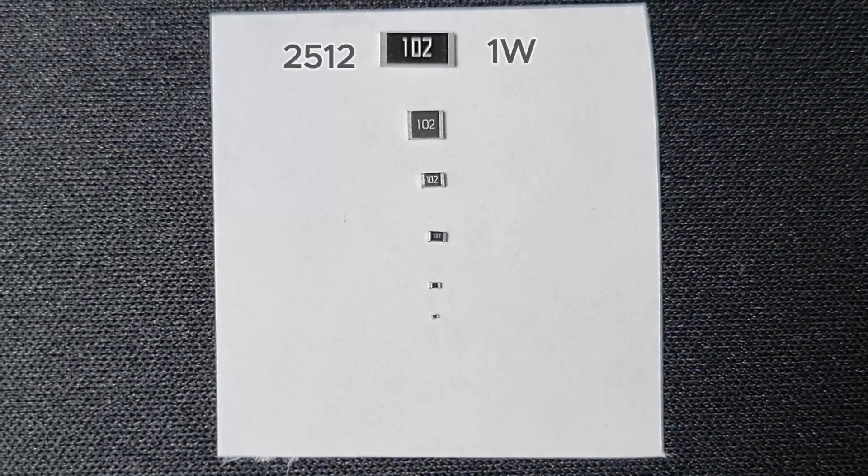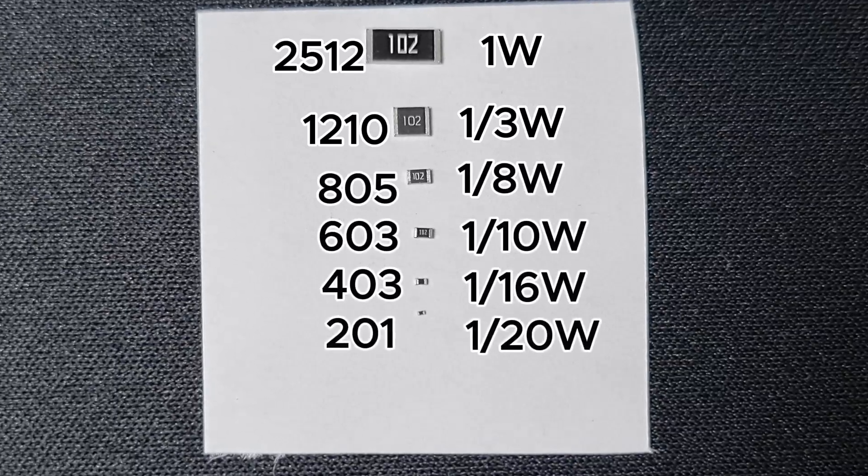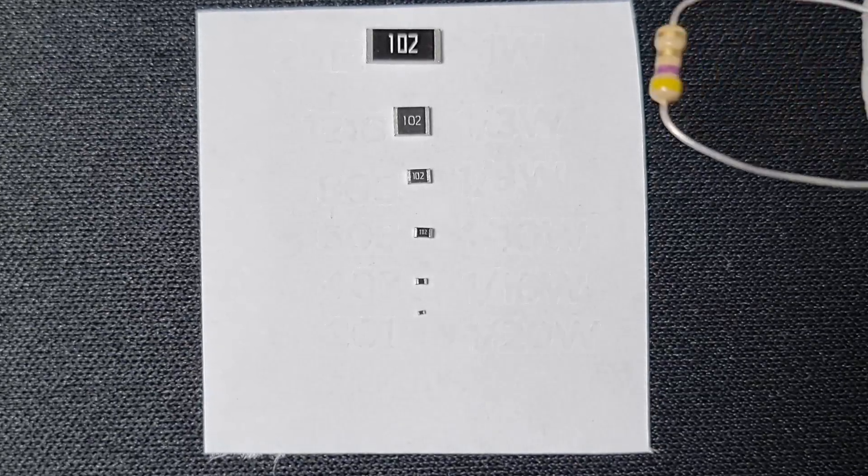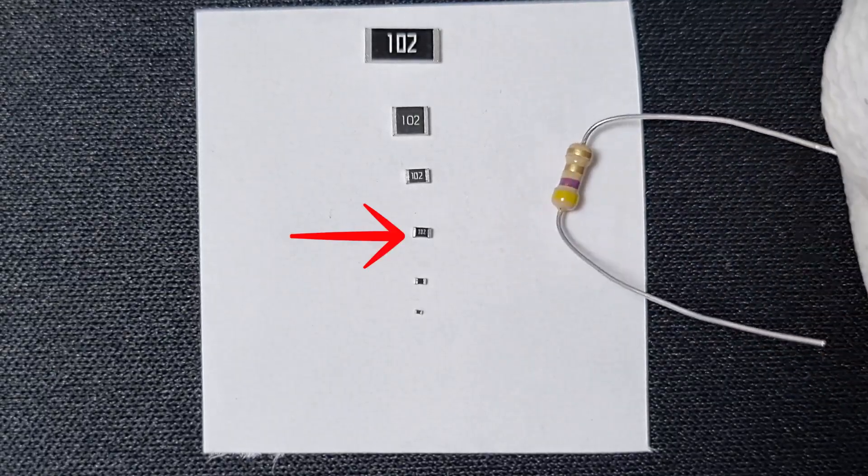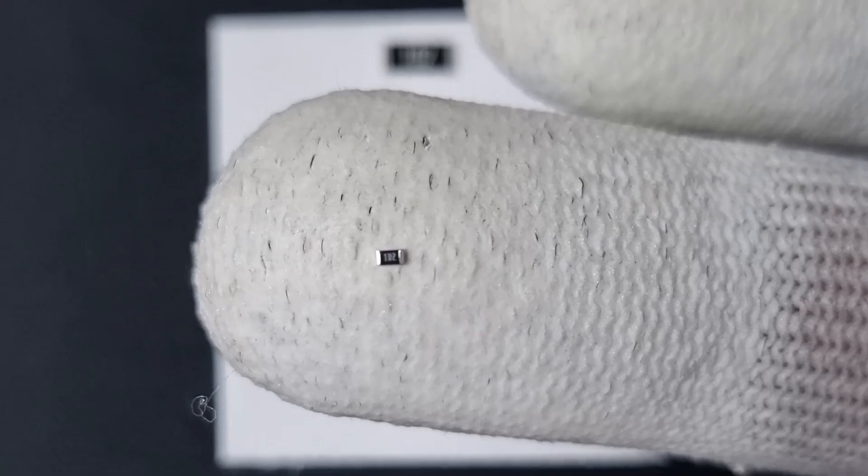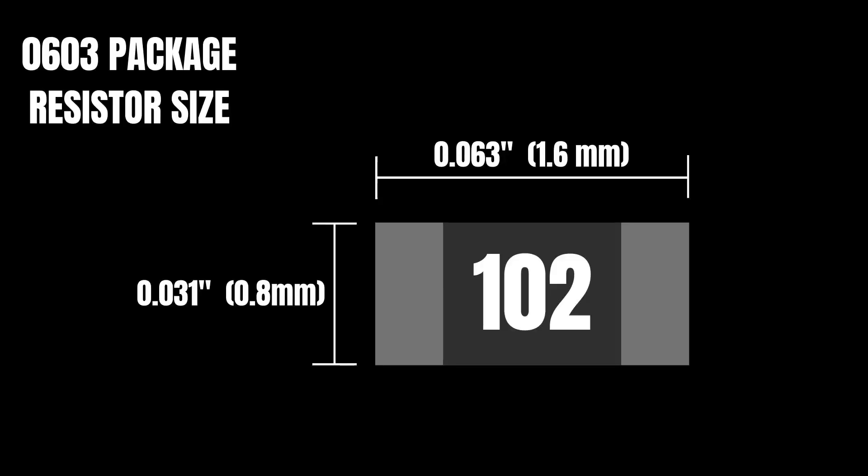Now let's continue with SMD resistors. On the screen you can see the most popular SMD packages and their power ratings. Let's take a closer look at a 0603 package resistor. As you can see, the package name itself indicates the size of the resistor.